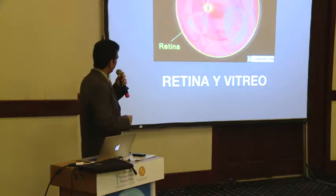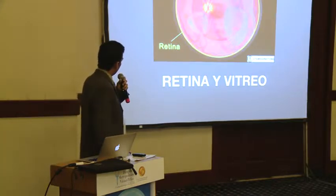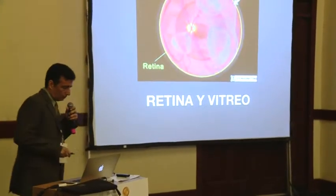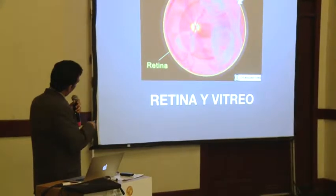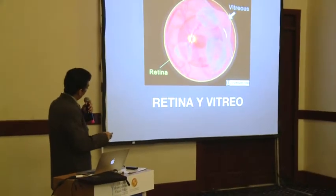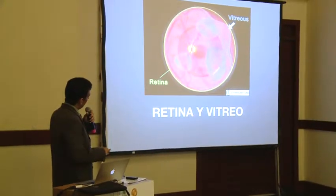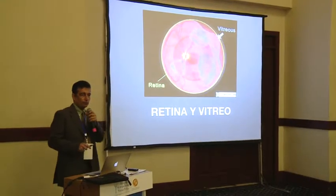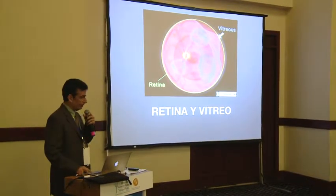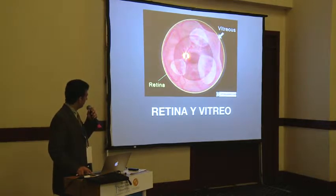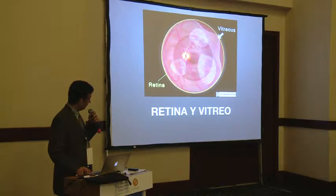Para empezar, generalmente lo que es retina y vítreo: la retina es la membrana más interna del ojo, la membrana amarilla, y el vítreo es el gel que está dentro de esa cavidad. Al fondo está el nervio óptico, la mácula, y alrededor de ahí son las patologías que vamos a tratar de manejar. Esto es cortesía de IMAGINATION, que fue uno de los primeros animadores para información de pacientes en oftalmología.